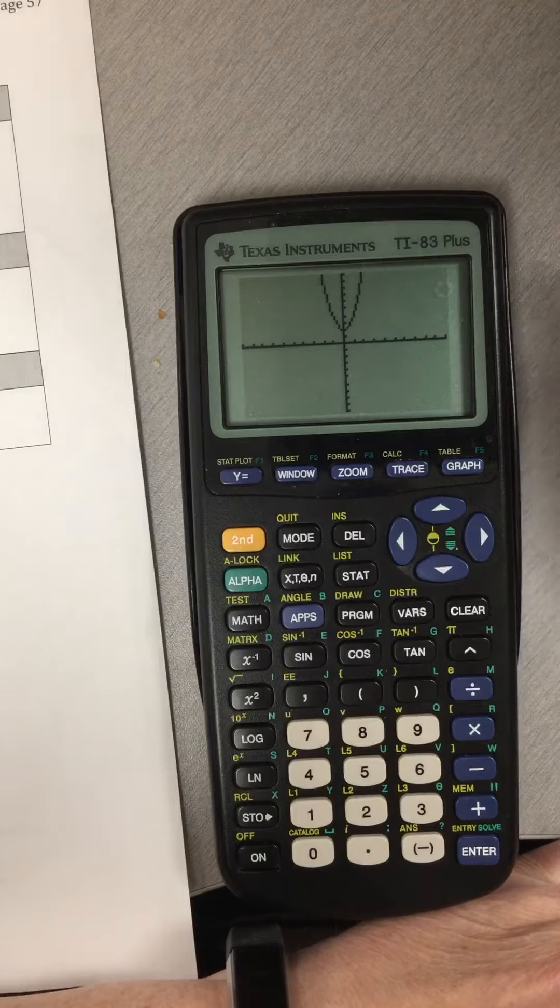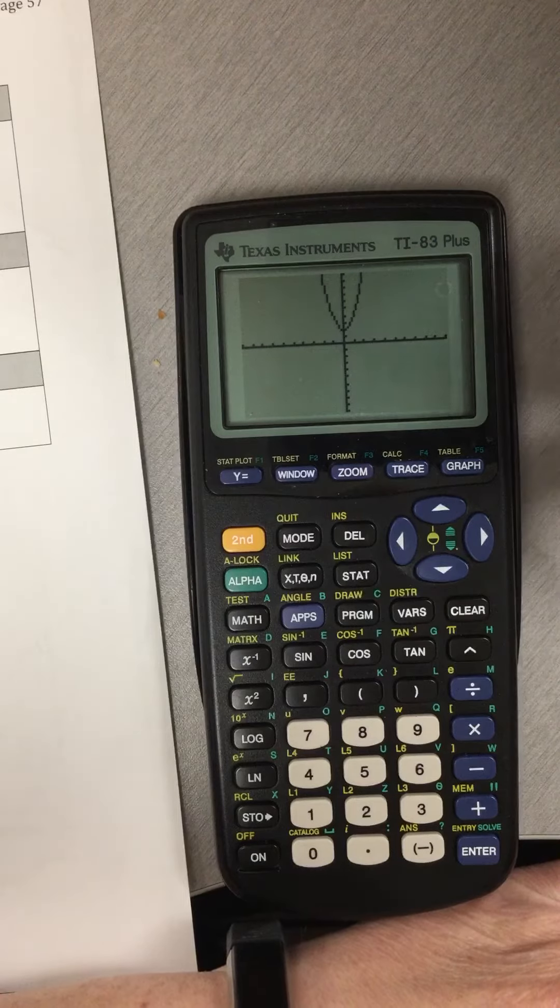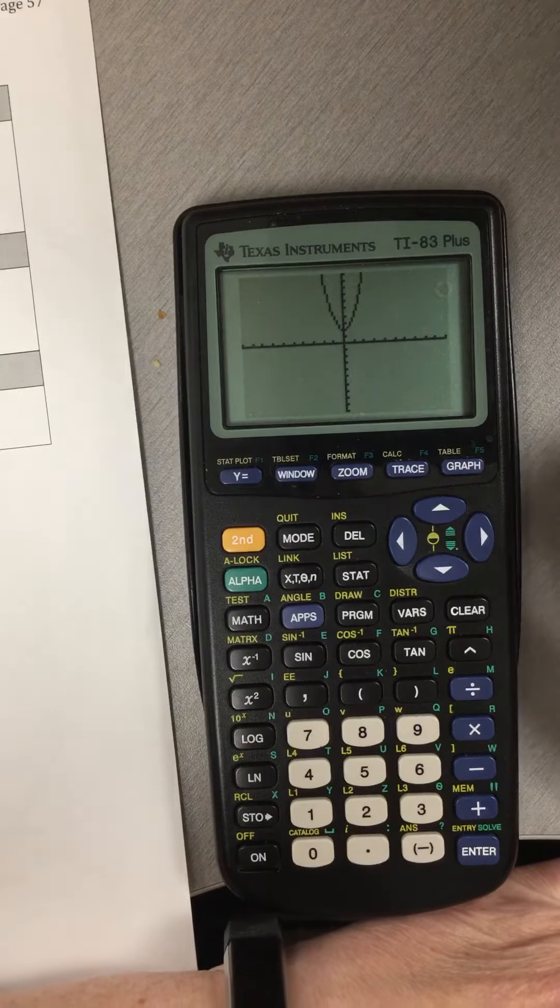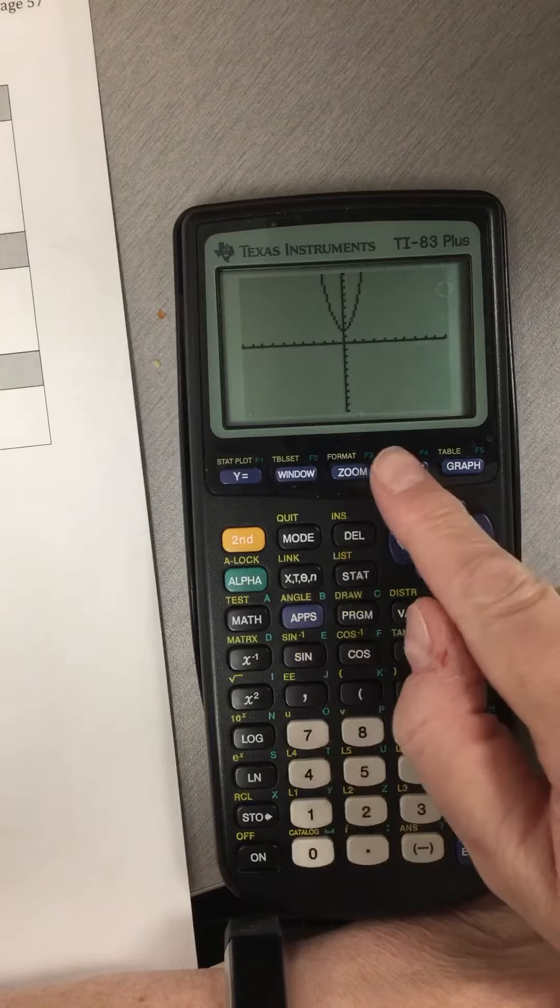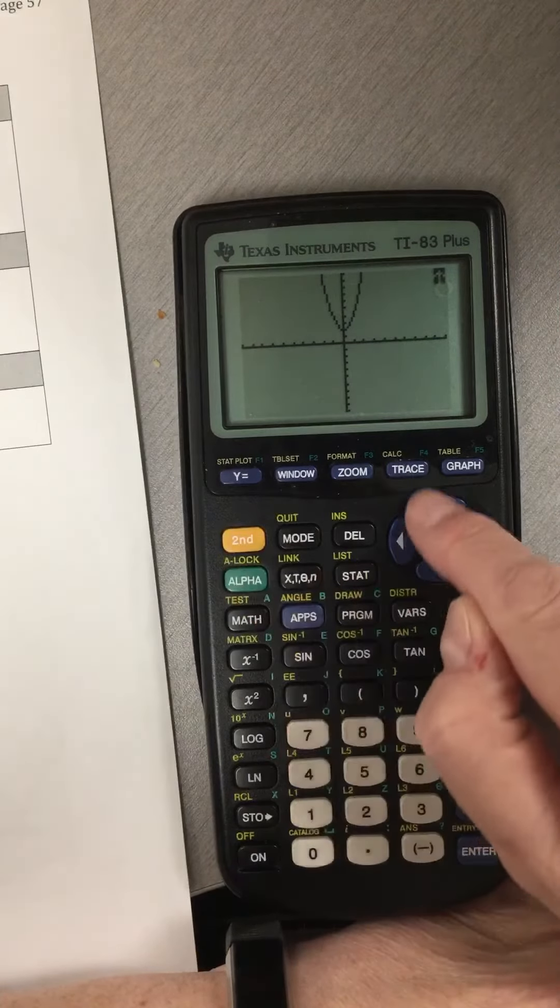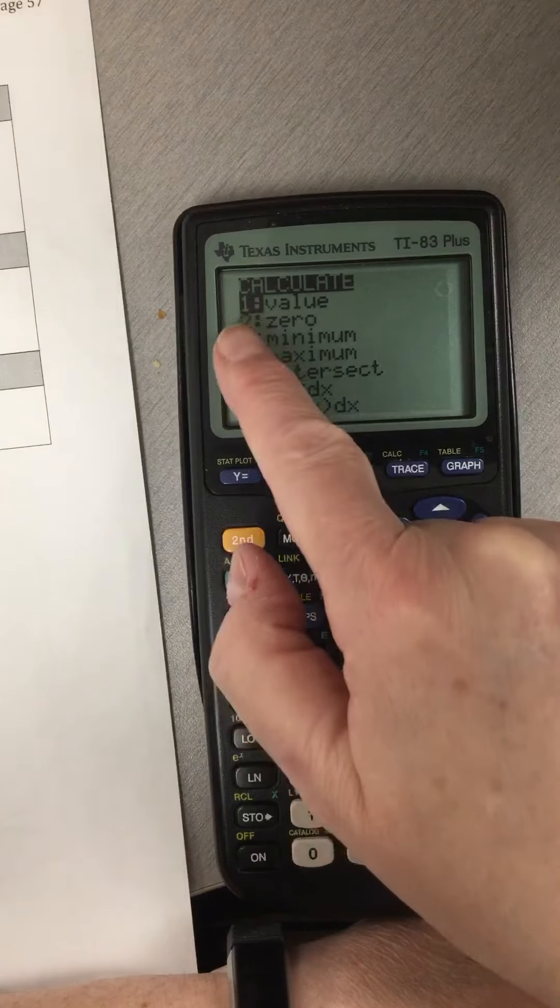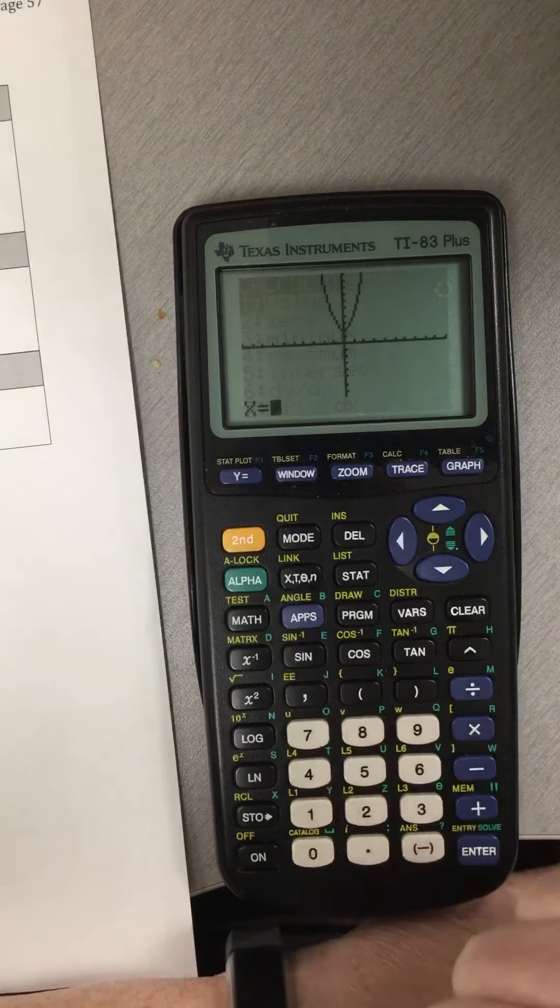So say I want to know what is the y-value when x equals 2. What I do is I hit second, trace, and then I select 1.